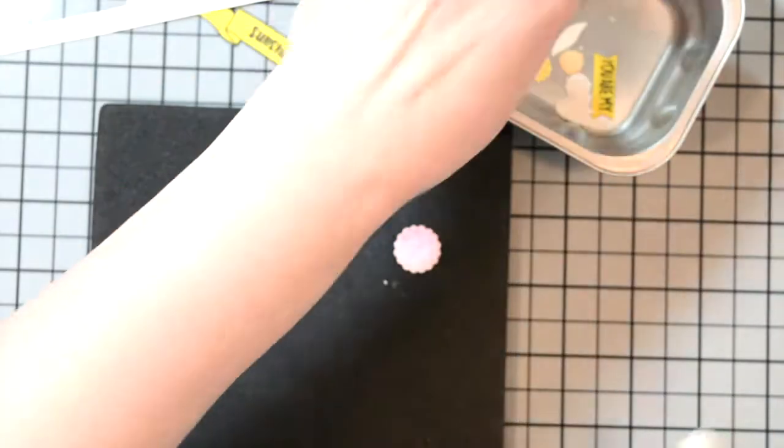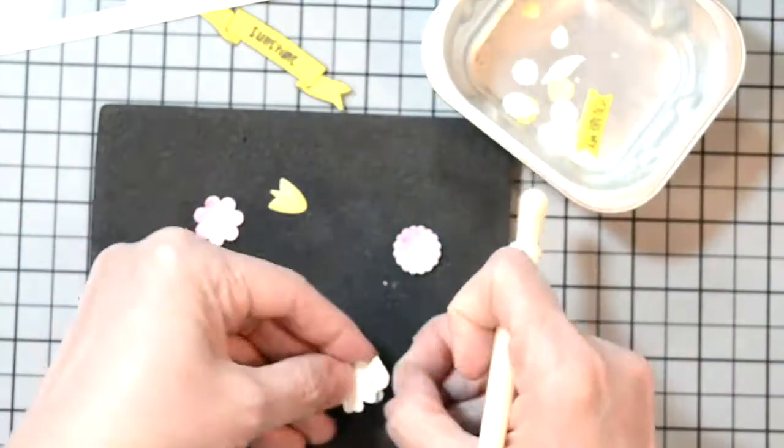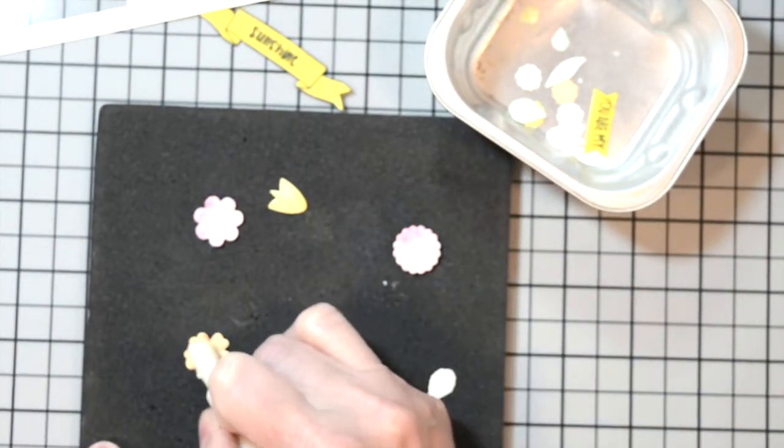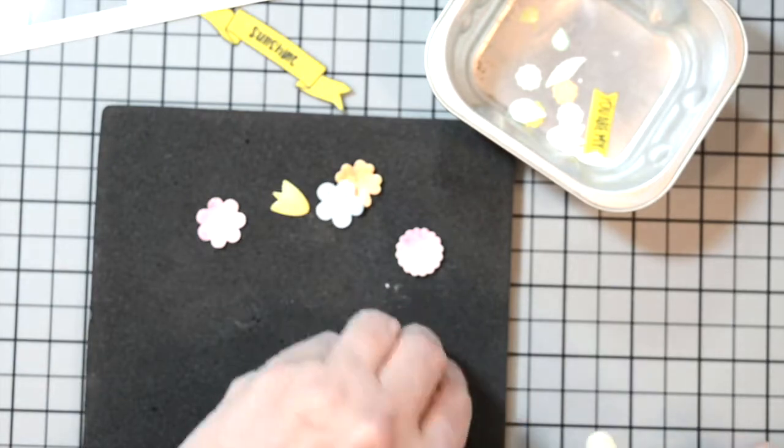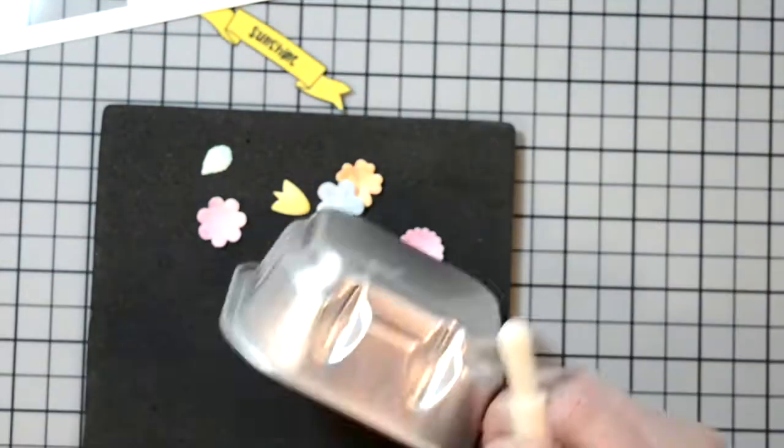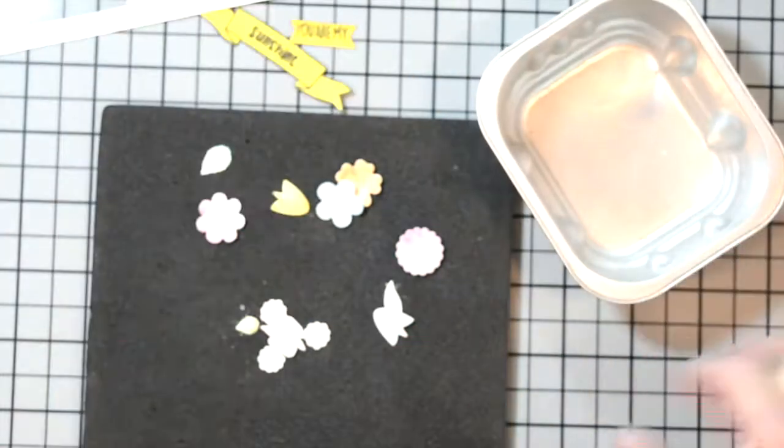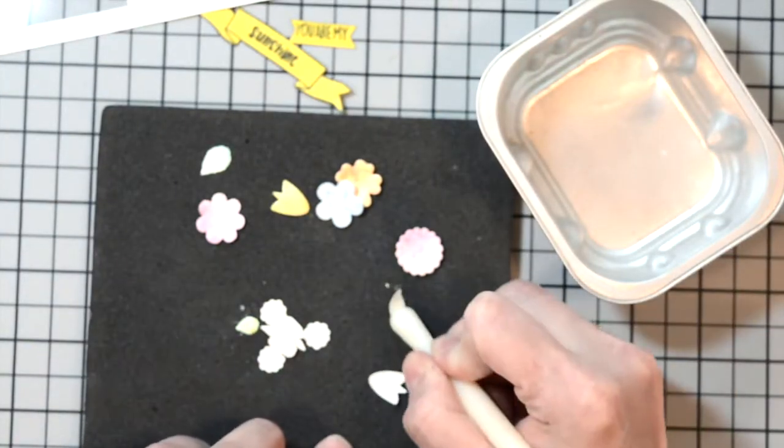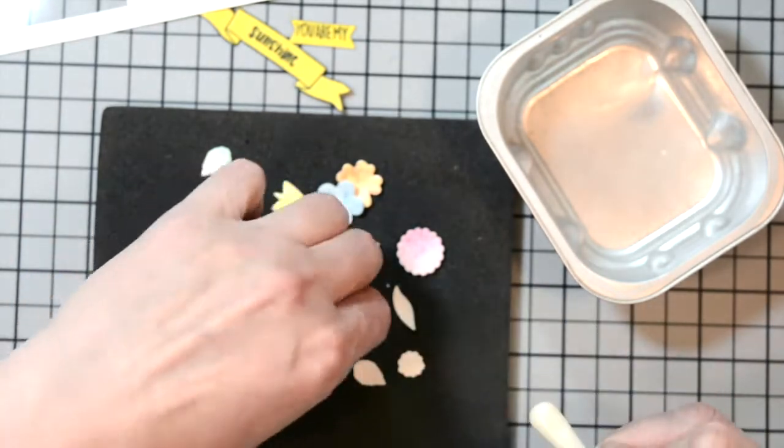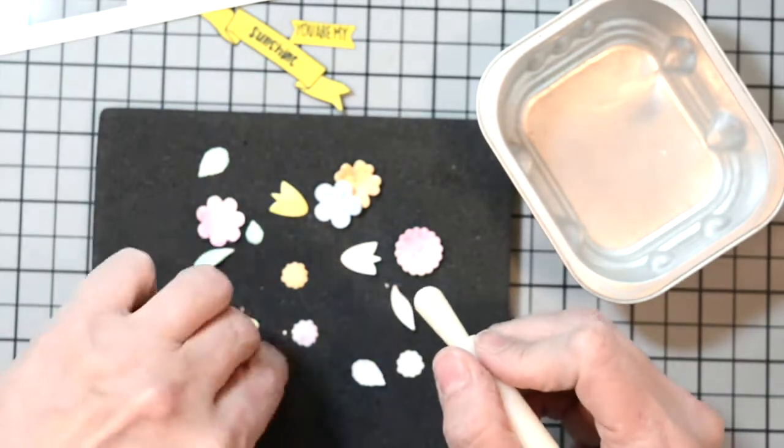For the tulips, I curl them on the back so that it gives them a nice texture. I do the same to the leaves. I'm just going to continue to do this to all the flowers. And for the leaves, again, I do it on the back, it gives it a nice texture. I'm going to do this to all the flowers and leaves to just give them a nice little curve and texture so they will add some nice dimension to our card.